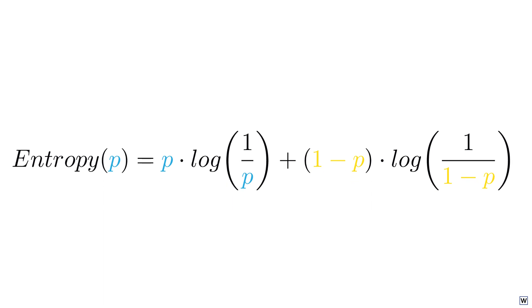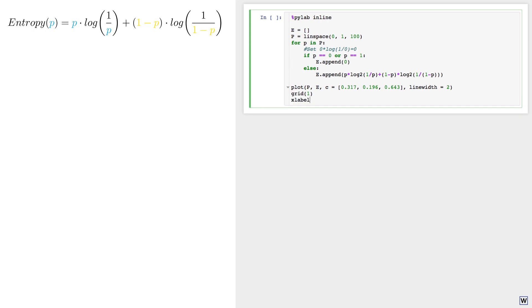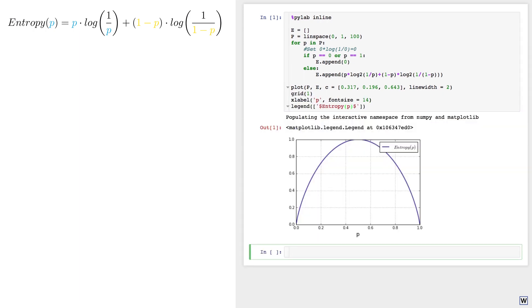To get a better sense for our new metric, let's plot it. We know p can take on any value from 0 to 1, so let's visualize our entropy function between these values. Our resulting plot should look suspiciously similar to a result from earlier.